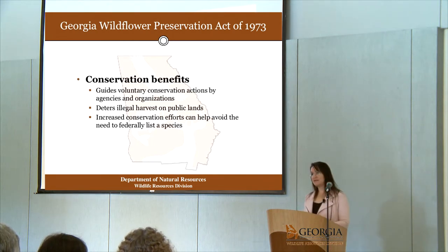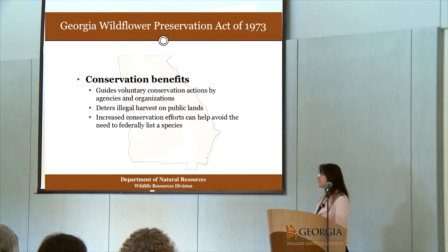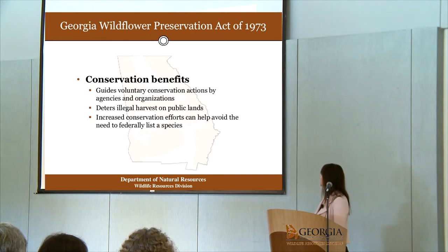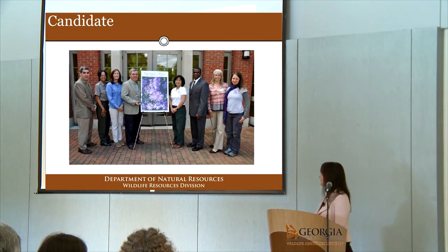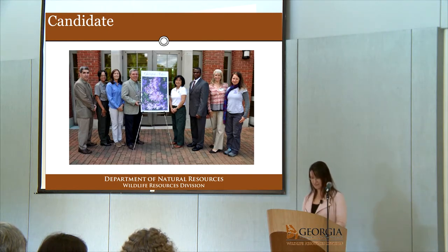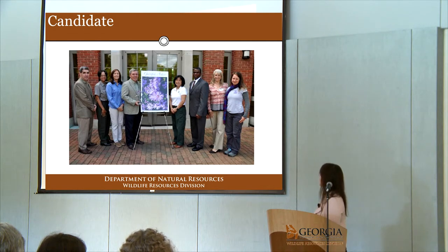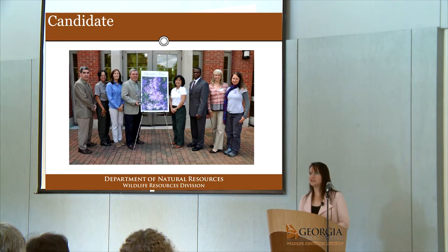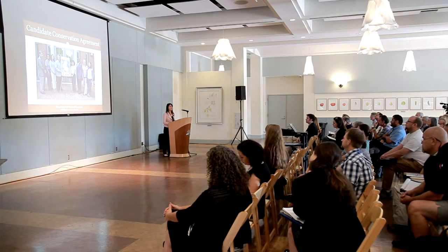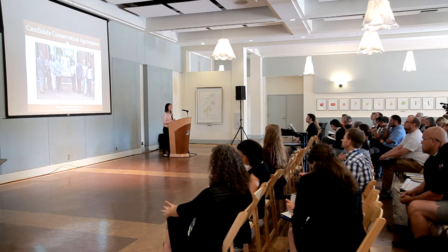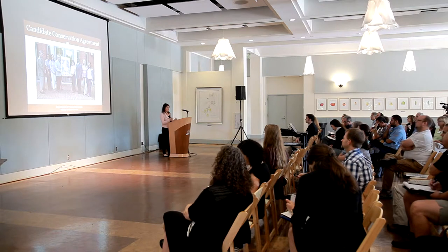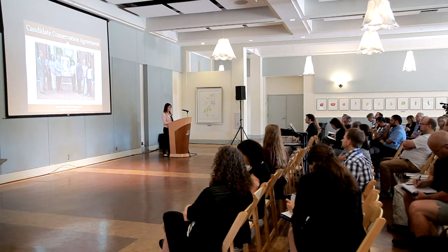Some conservation benefits seen from this act include that it guides voluntary conservation actions by agencies and organizations, deters illegal harvest on public lands, and increased conservation efforts can help avoid the need to federally list a species. The Georgia Plant Conservation Alliance assisted the Fish and Wildlife Service with developing a candidate conservation agreement for the Georgia Aster. The Georgia Aster was a candidate species and is no longer because agreements like these can help facilitate the actions needed to prevent the species from declining to the point where it needs to be federally listed.